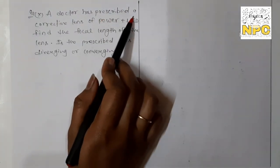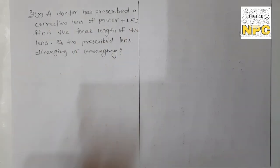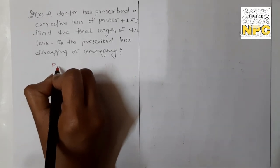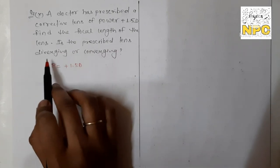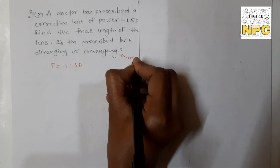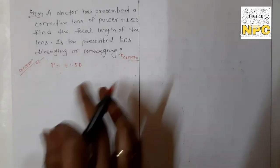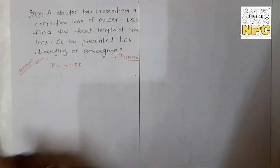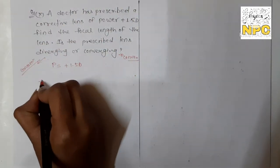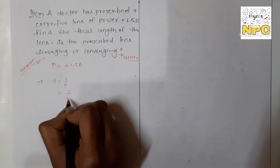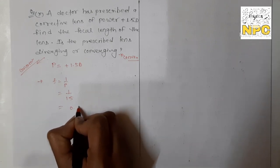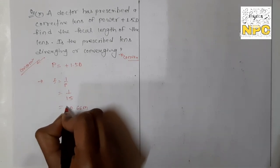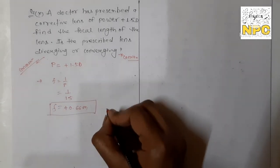Question number ten: a doctor has prescribed a corrective lens of power +1.5 diopter. The positive sign means a convex (converging) lens is used. P = +1.5 diopter. Finding the focal length: F = 1/P = 1/1.5 ≈ 0.66 meter. So the focal length is +0.66 meter. Since the power is positive, the prescribed lens is a converging (convex) lens.